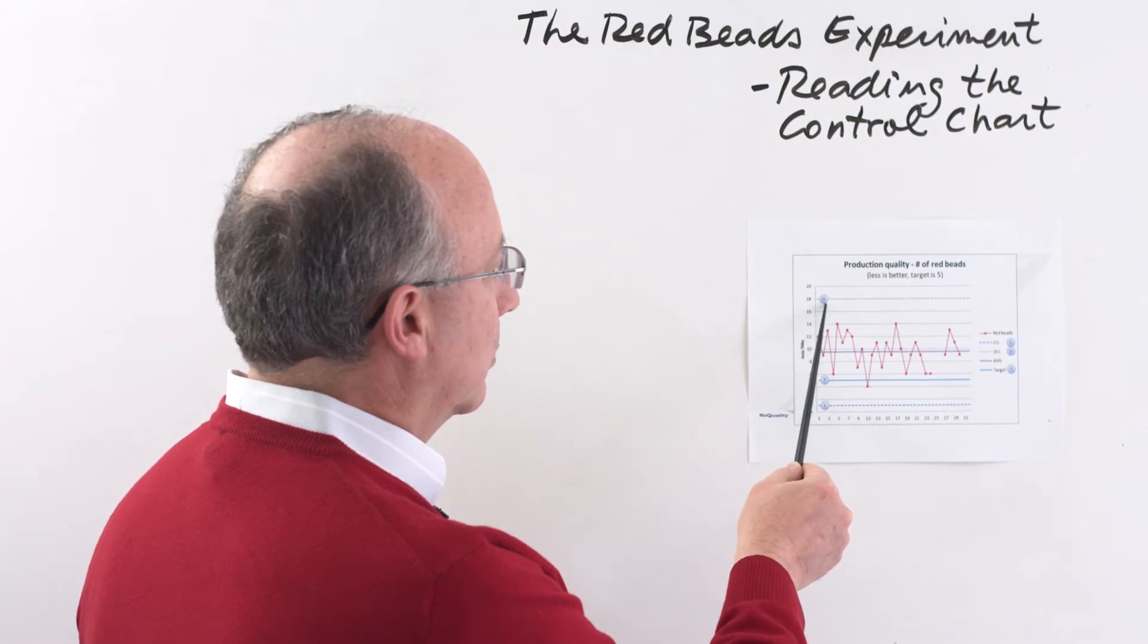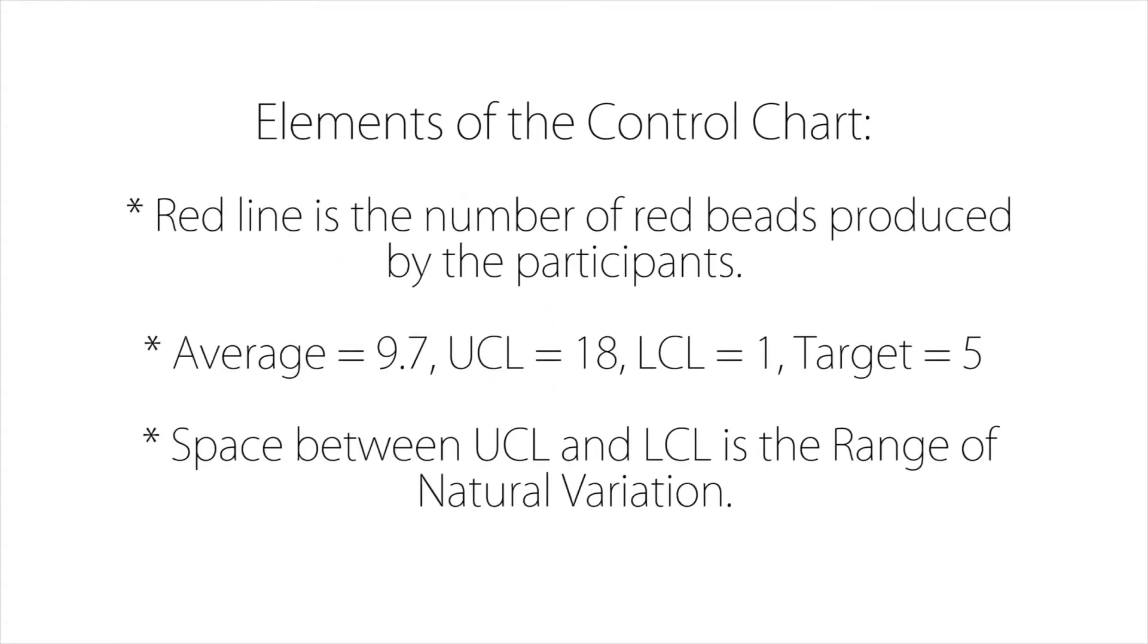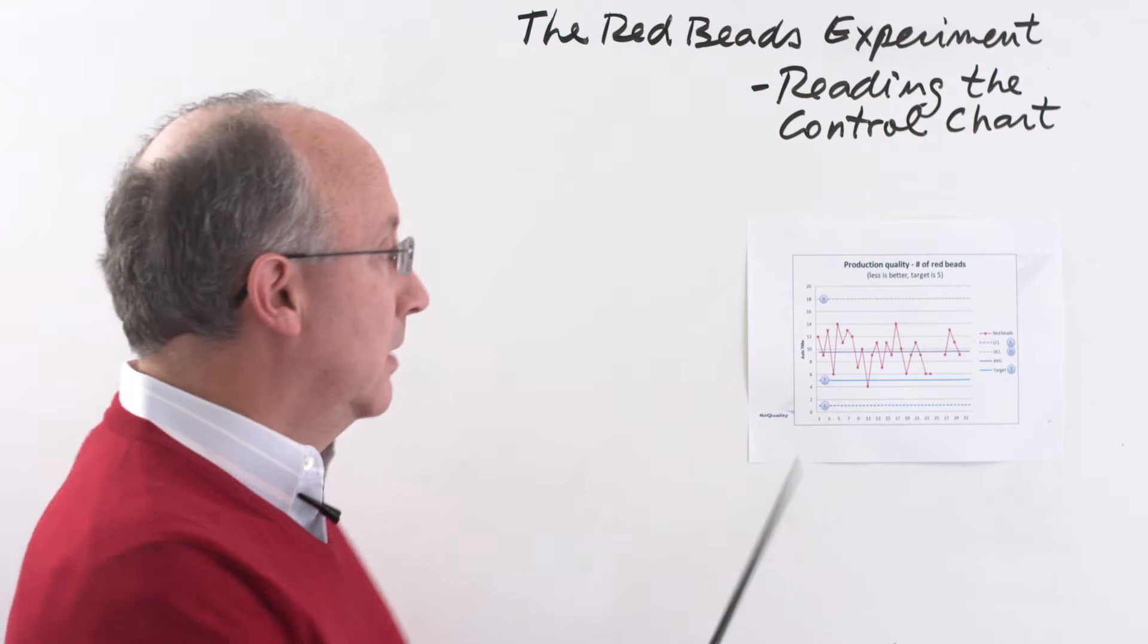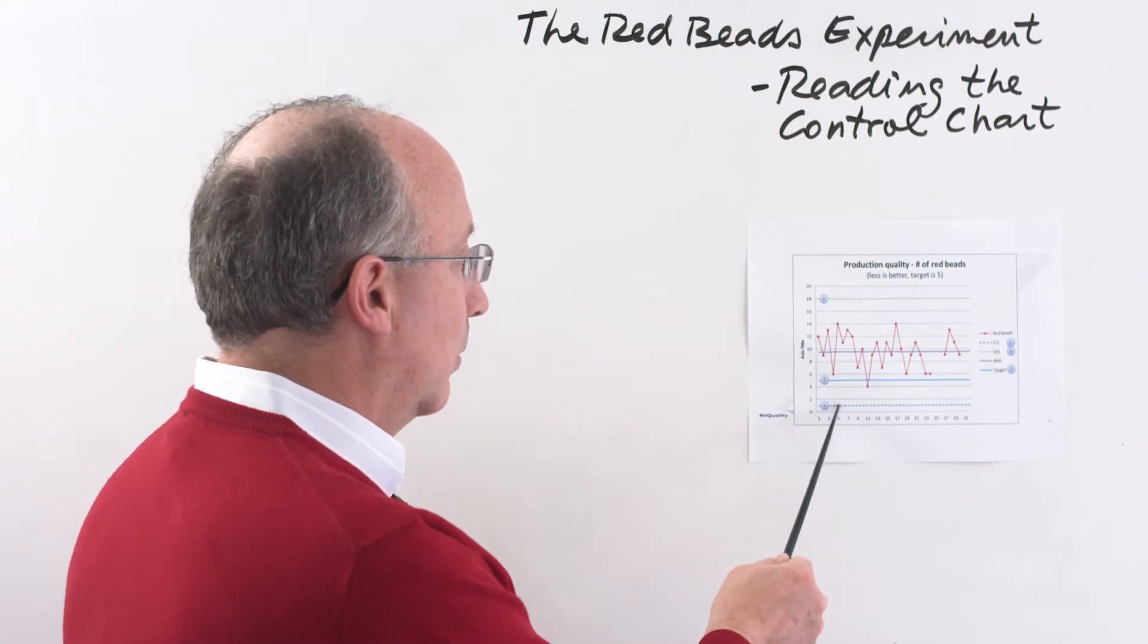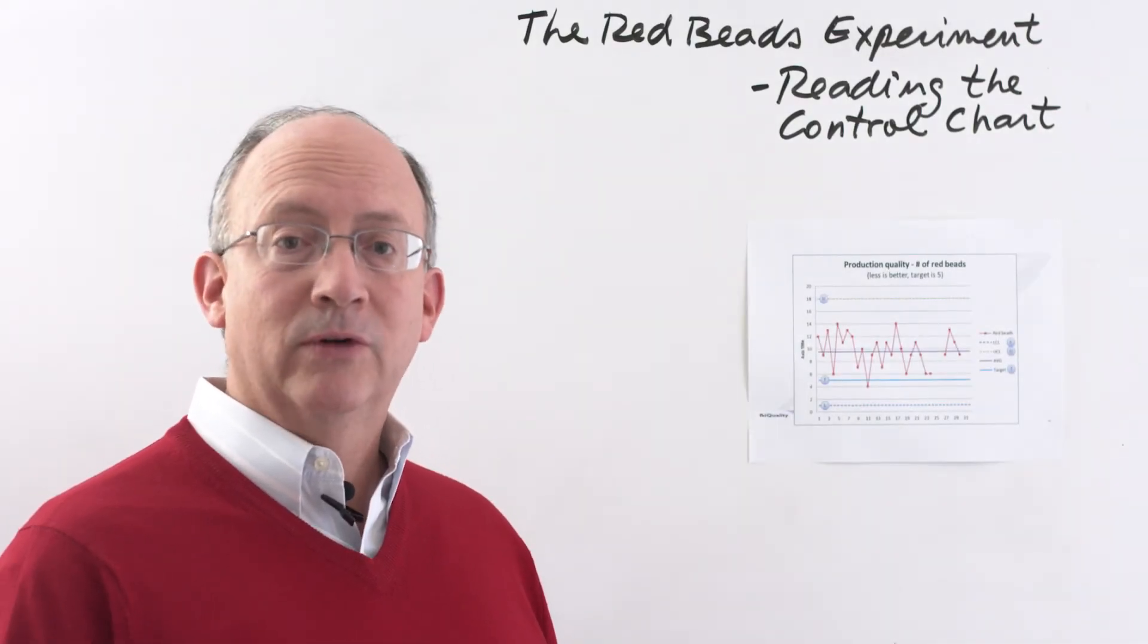In addition to this, there is also a line called label U over here, which is the upper control limit, which is calculated to be at about 18. And then another line over here called L, which is the lower control limit, calculated to be at about 1. We also have the target line, which is what the customer wanted us to get in terms of number of red beads, and that is at 5. This line is not really part of the control chart, but it's clearly something that customers wanted. The upper limit and the control limit describe what we're going to call a range of natural variation.